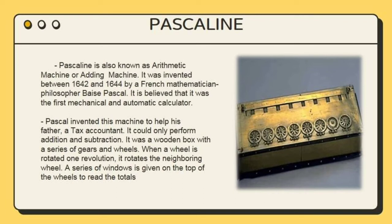Next is the Pascaline, also known as the arithmetic machine or adding machine. It was invented between 1642 and 1644 by a French mathematician and philosopher, Blaise Pascal. It is believed that it was the first mechanical and automatic calculator. Pascal invented this machine to help his father, a tax accountant. It could only perform addition and subtraction.